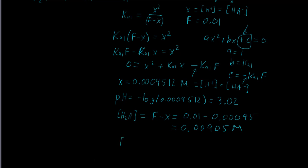Finally, we figure out the small amount of A2- present. A little of the HA- deprotonates, and we found last time that the A2- concentration is approximately equal to Ka2, which is 1×10⁻⁸ molar. Those are the concentrations of all the important species along with the pH.